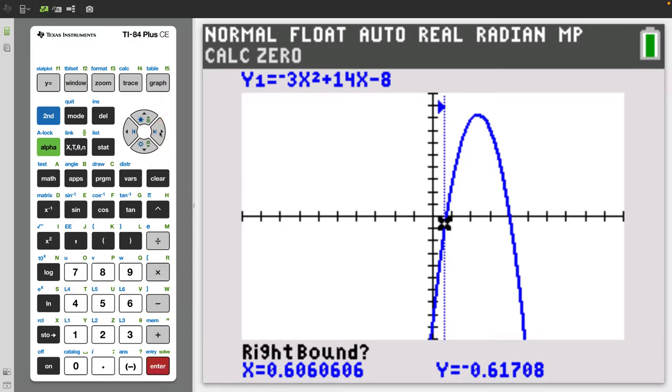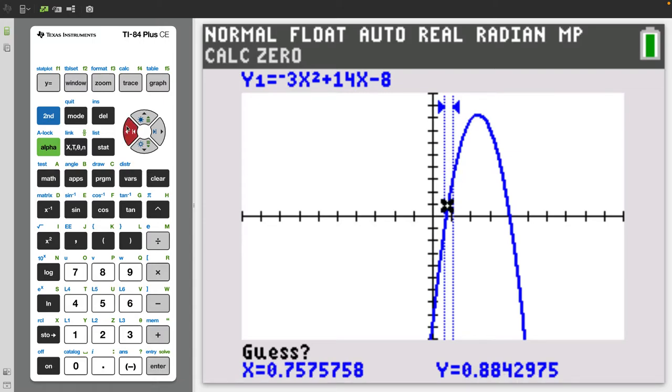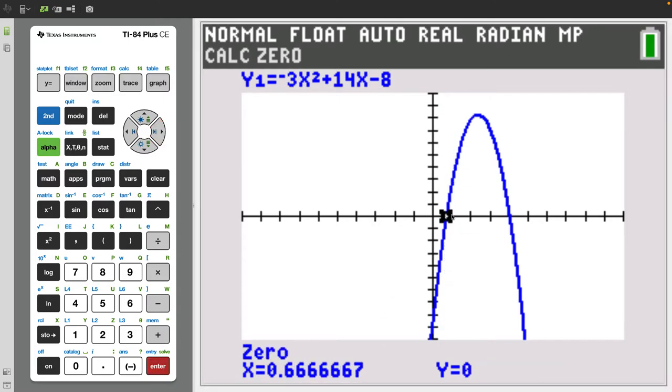Now it's asking for a right bound so we go above the x-axis and in fact just one hop gives us that. And just to prove that it doesn't have to be very precise let's say we go there. Now it's asking us for a guess so let's say we guess, we don't even have to guess very well, let's in fact give it a bad guess something like that. And it's still going to catch it. Now obviously the more you help your calculator out the better the answer is going to be or the faster it's going to work instead of having to do a lot of computations to come up with the right answer. But in this case it comes up with a zero of 0.666 repeating which is two-thirds and then a y value of zero which is expected because it's an x intercept.